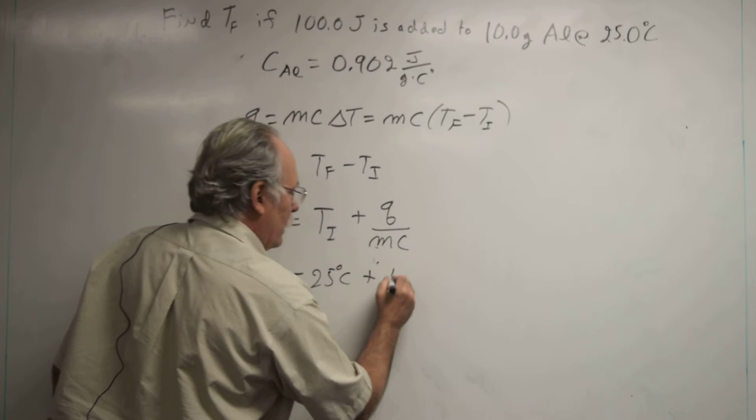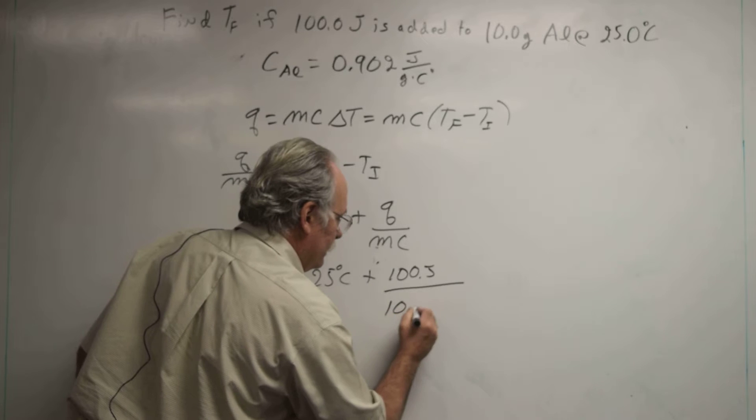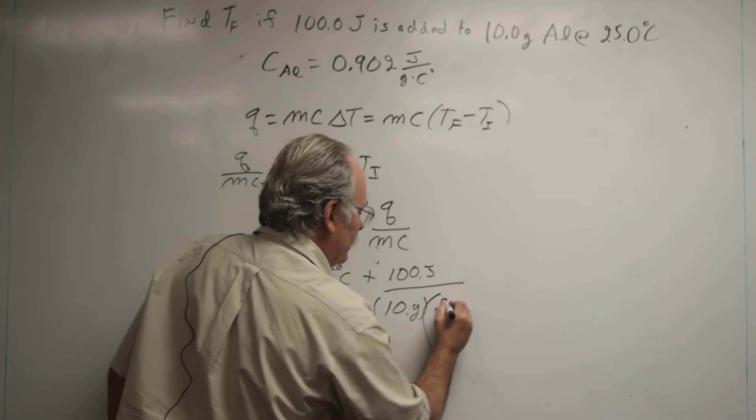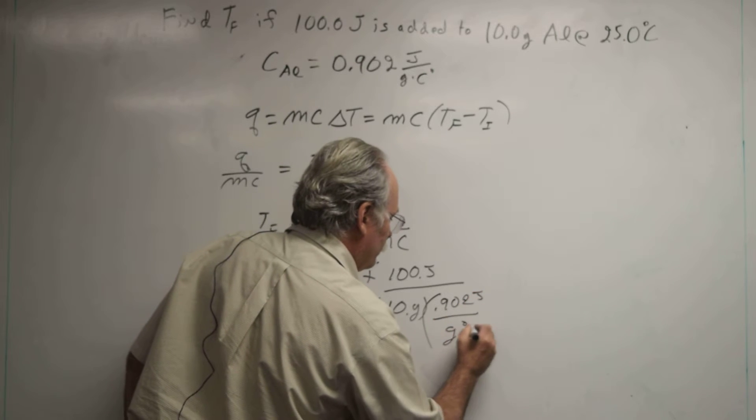plus 100 joules divided by 10 grams times 0.902 joules per gram degrees C.